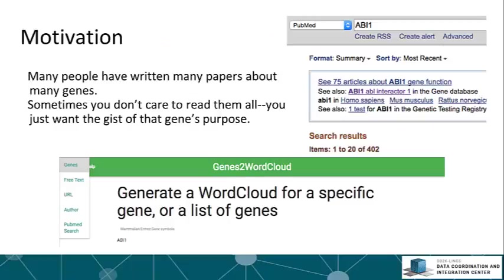You'll notice here I've queried ABI1, a gene, and got 402 results. No one wants to read all that — well, maybe, but not right away. First, put it into the gene word cloud and get a nice visual summary. The visualizations we generate can be quick and powerful in their reach.